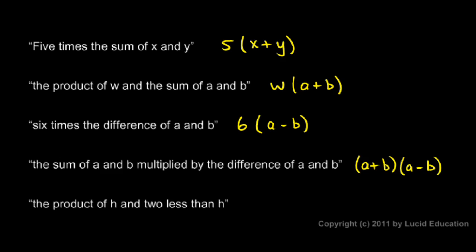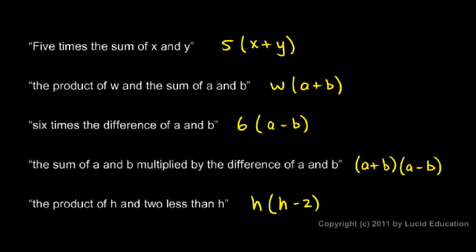And the product of h and two less than h. Product means multiply, so we have two things we're multiplying: h and two less than h. Two less than h is h minus two. So we have h times (h minus two).